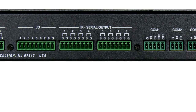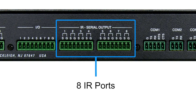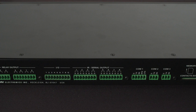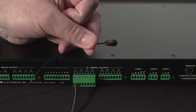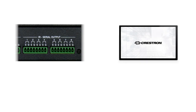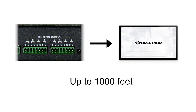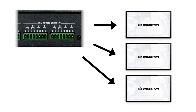Another common method of control is infrared, or IR. On the CP3, we can see eight IR ports available, though other control processor models may have fewer. Each IR port can connect to an IRP2 infrared probe, which attaches to the front of the device you wish to control, allowing us to send the same infrared commands as the original remote control. These IR probes operate up to a distance of 1,000 feet. Multiple devices can be programmed on a single port — we can attach three IRP2 probes to a single port, though if all three devices are the same, they'll operate simultaneously.